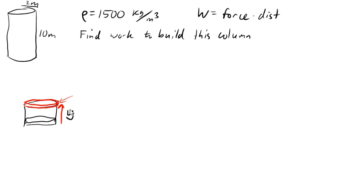In order to figure out how much mass this slice has, we can take the density, which is the 1,500 kilograms per cubic meter, and we can multiply it by a number of cubic meters, which would be the volume of this slice.